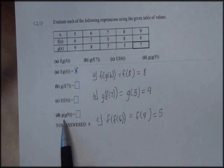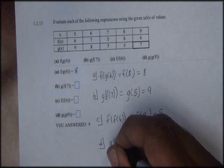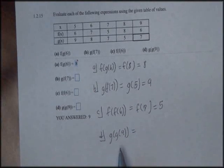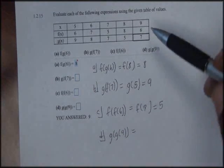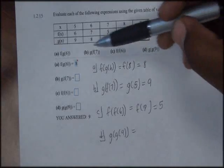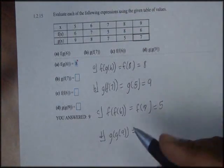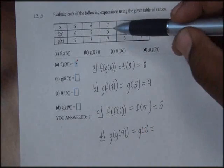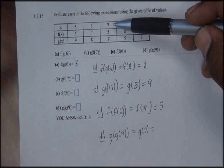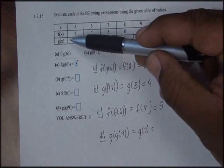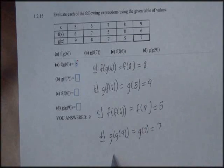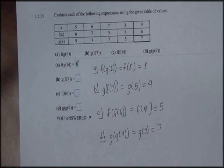For our last problem we'll find g of g of 9. First I'll find g of 9 by inputting 9 into the g of x function and it returns a 7. So now we'll find g of 7 — we take the domain value 7, insert it into the g of x function, and it outputs a 7. Therefore g of g of 9 is equal to 7.